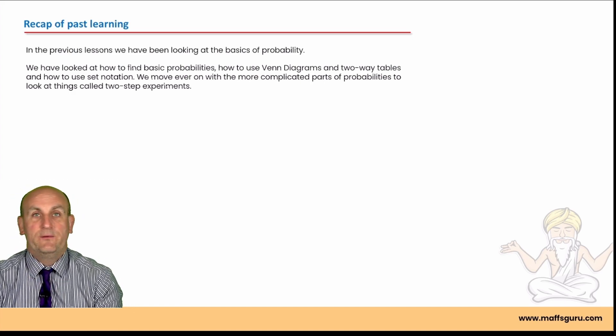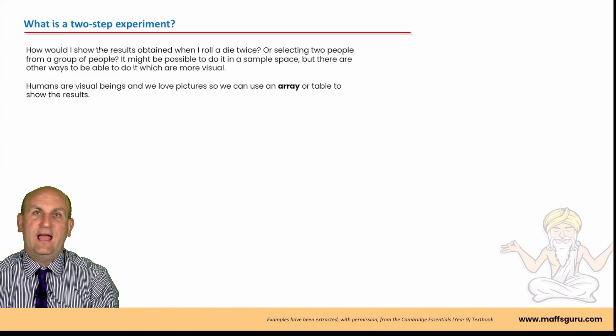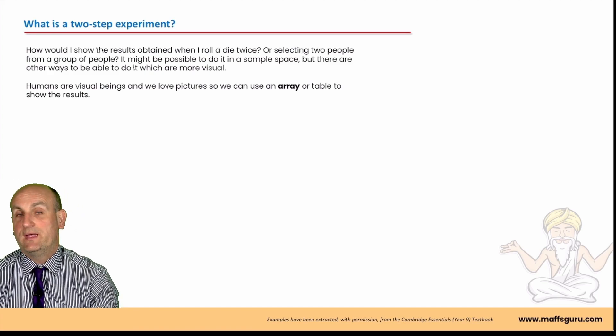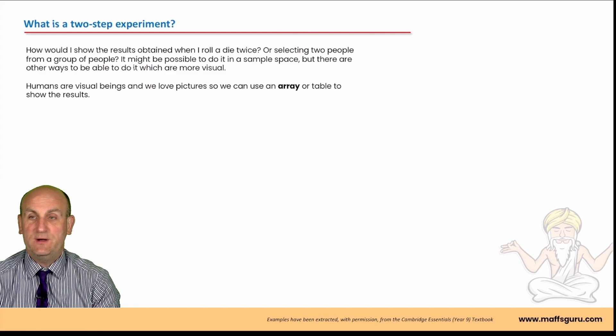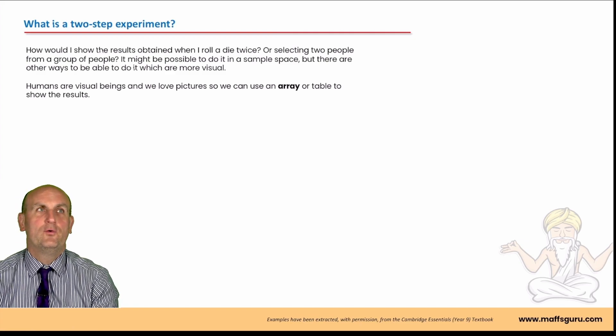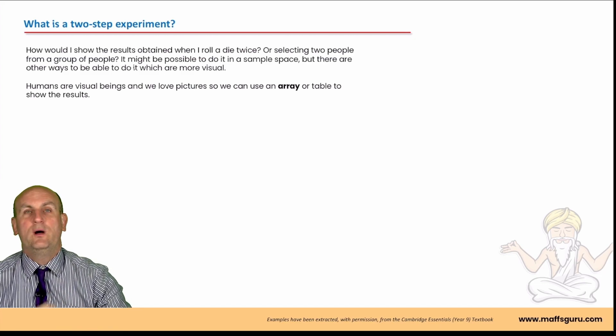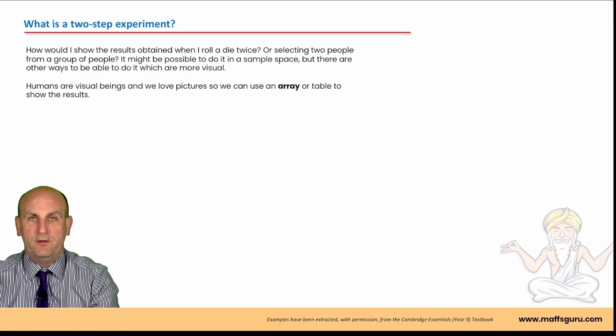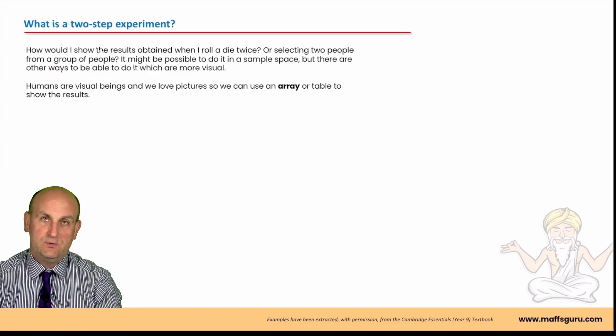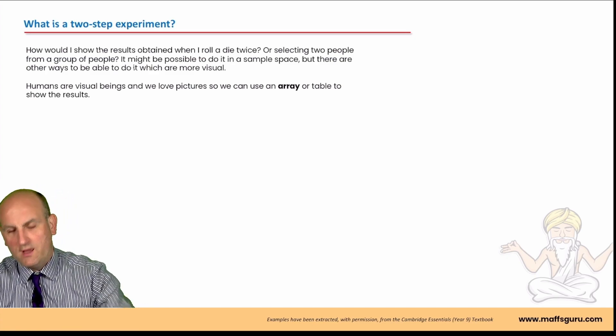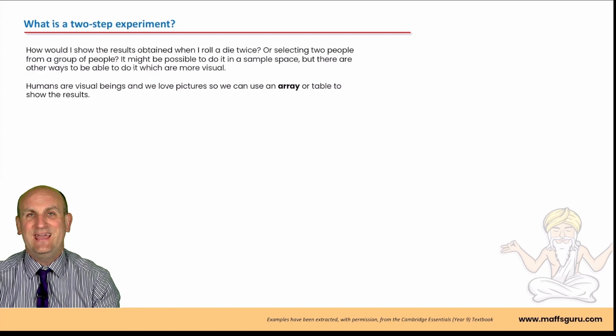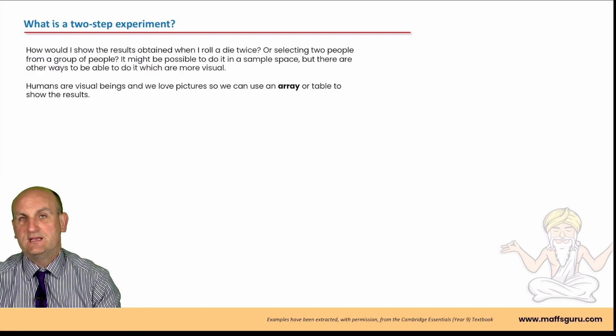Now, there's lots of experiments we can do in maths. And many of them require us to do something twice. And that's very much what a two-step experiment is. For example, tossing a coin. If I tossed a coin twice and wrote down what I got on both coins, that is an example of a two-step experiment.